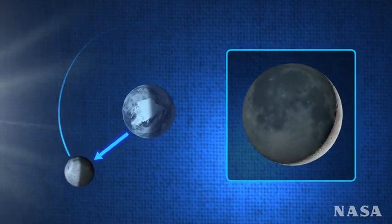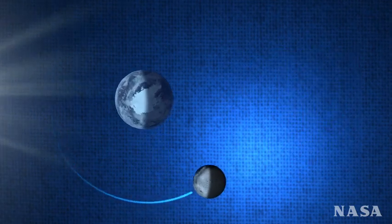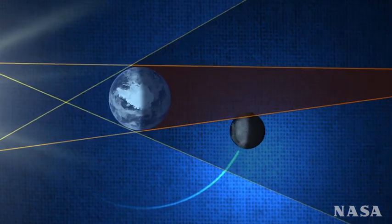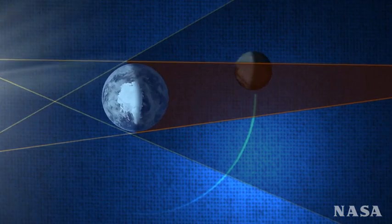At least twice a year, however, something quite different happens. The moon passes through the shadow cast by the Earth, causing it to look extremely unusual for a short period of time.